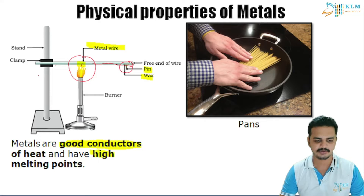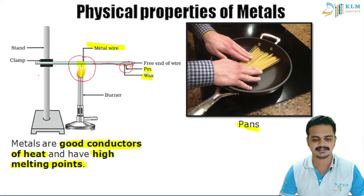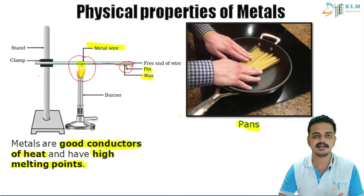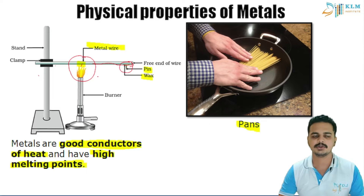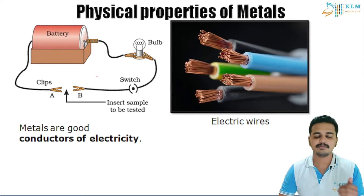This shows that metals are very good conductors of heat, and they also have a high melting point. This is why metals are used in cooking pans — the high melting point means the pan doesn't melt on the stove, and the heat conductivity ensures heat transfers well to the food being cooked.